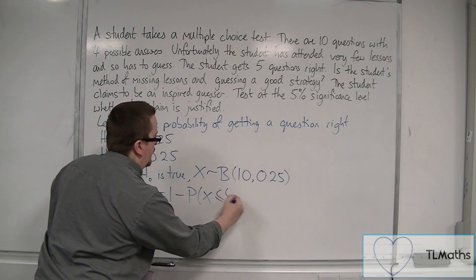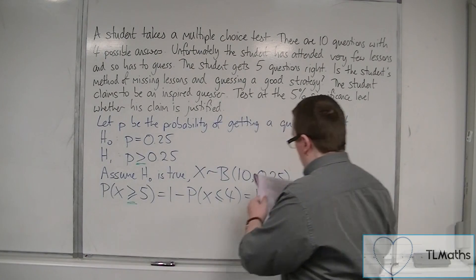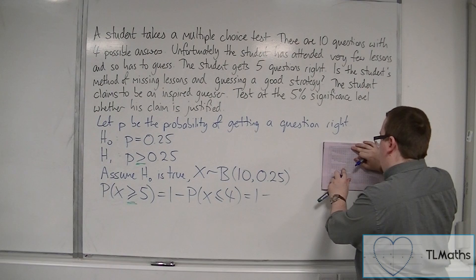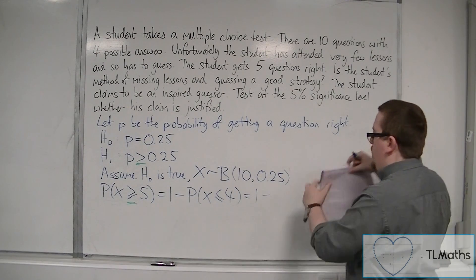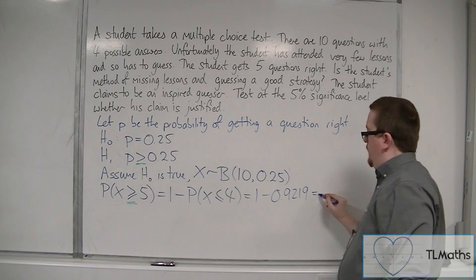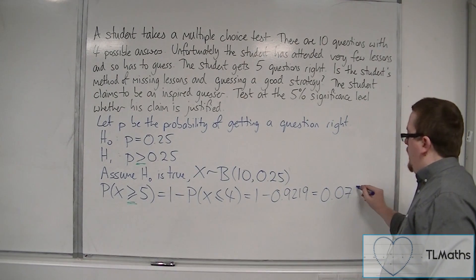the probability of X being less than or equal to 4. So that's one takeaway. So 4 would be 0.9219. One takeaway from that is 0.0781.